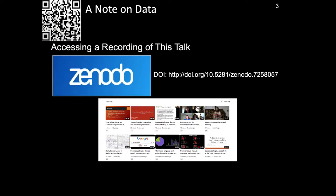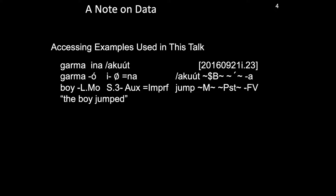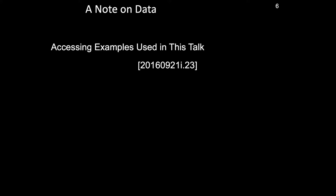First of all, I'd like to make a couple of notes on the data being used in today's talk. A recording of this talk will be made available shortly after its live presentation both on Zenodo at the DOI given, as well as on YouTube via the QR code on screen. In terms of accessing the examples used in this talk, most utterances of phrasal length or longer which occur in my database are given with a unique identifier which occurs to the right of the first line of the gloss. These unique identifiers are made up of two parts: an alphanumeric code to the left of a full stop, and a number to the right of the full stop.